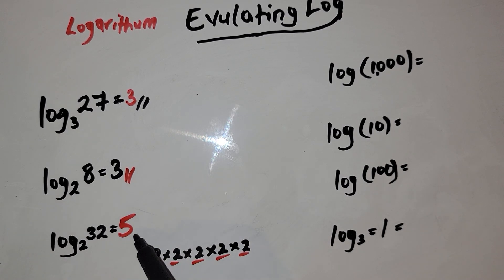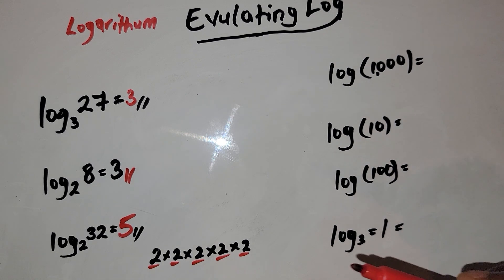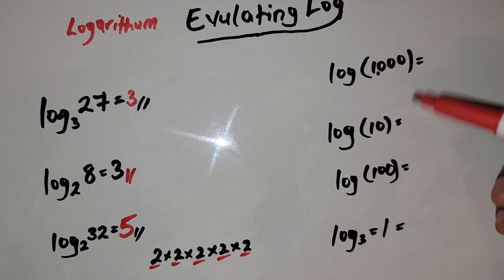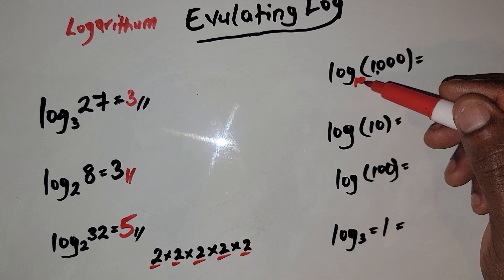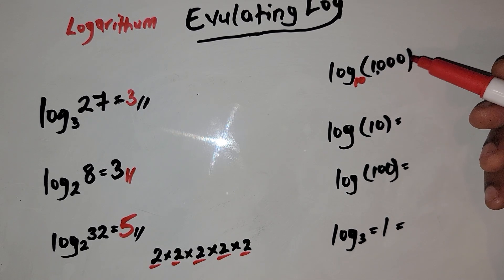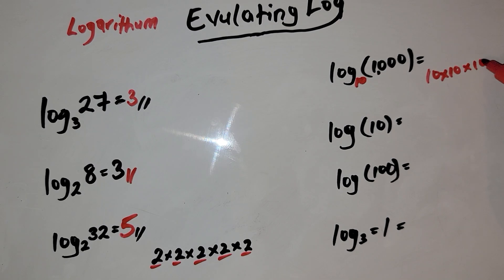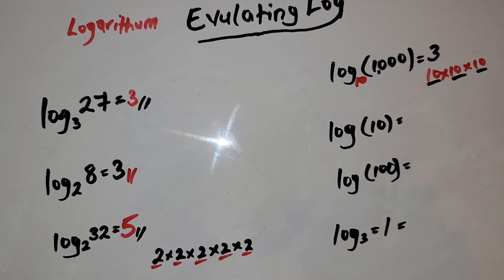So the answer here is going to be 5. Now let's do a more complicated problem. For this one, we don't have a base, and whenever you don't see a base it is assumed to be 10. So we ask ourselves: 10 raised to how many power gives us 1000? 10 times 10 is 100, and 100 times 10 is 1000 — so 10 raised to the third power. The answer is 3.